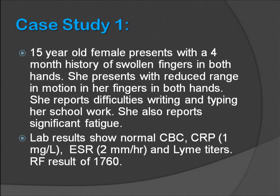The first case is a 15-year-old female who presents with a four-month history of swollen fingers in both hands. She presents with reduced range of motion in her fingers in both hands, reports difficulties writing and typing her schoolwork, and also reports significant fatigue. Her laboratory tests show a normal complete blood count, a normal CRP at 1 milligram per liter, a normal sed rate, and Lyme titers. Her rheumatoid factor result is 1760.